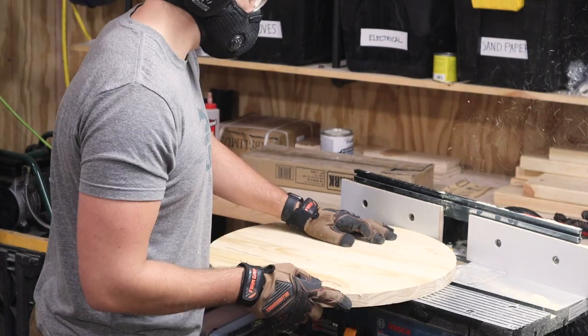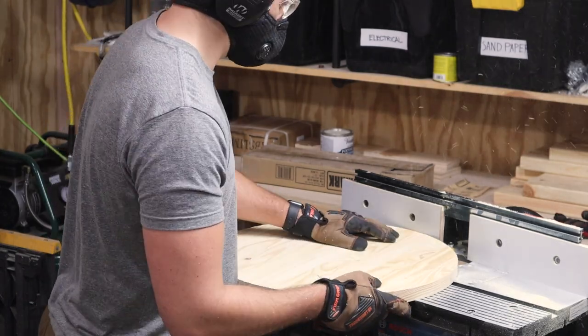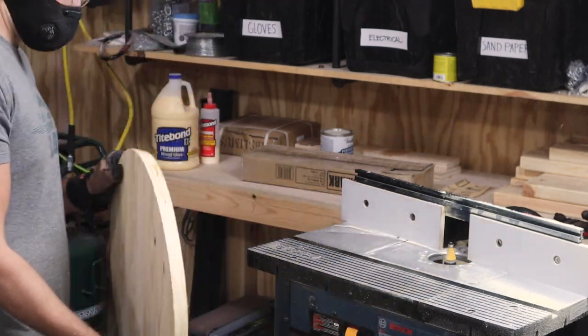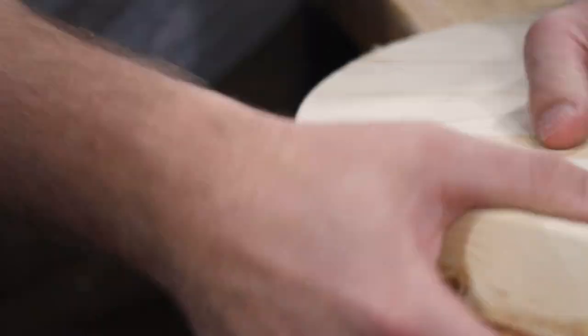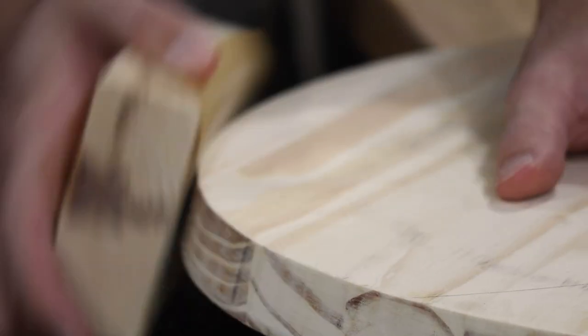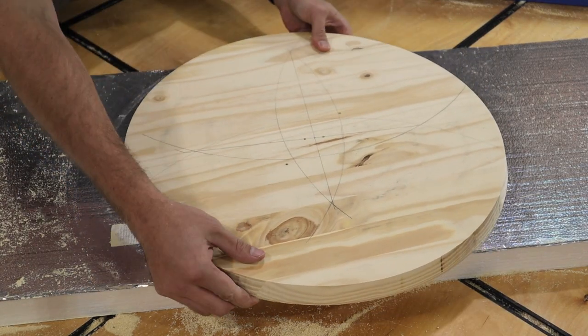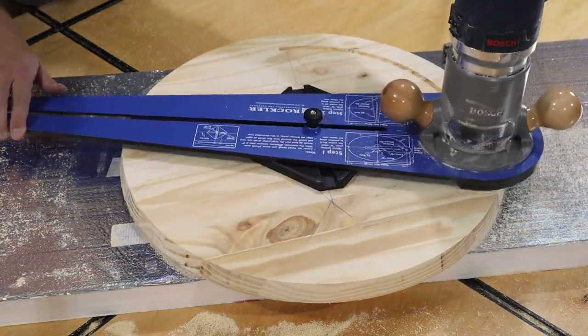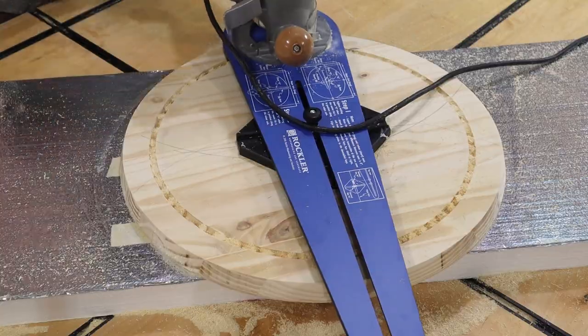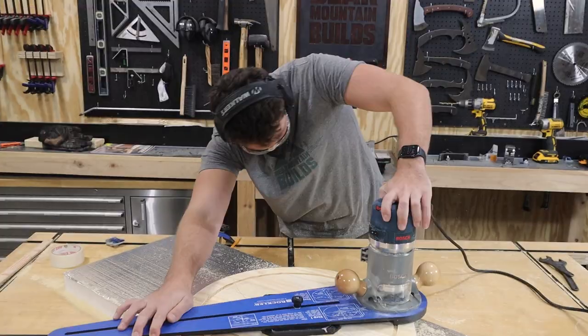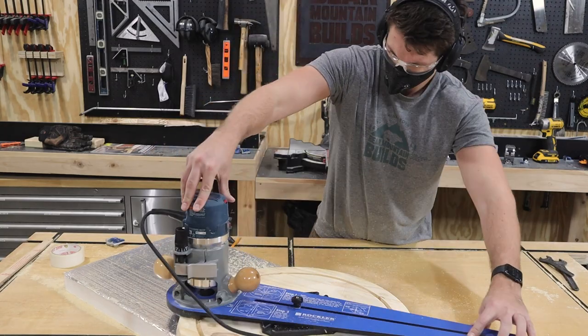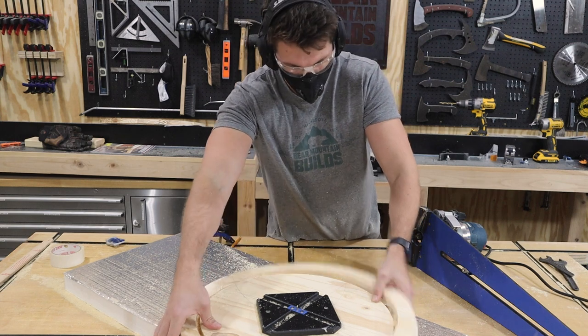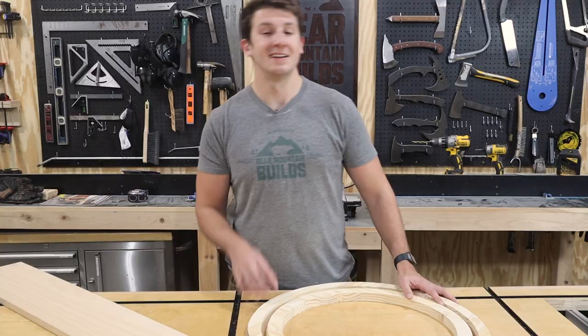With the smaller circle cut out, I'm back at the router table cutting another 15-degree chamfer. With my chamfer done, I'm back to my piece of foam to cut out the final ring.